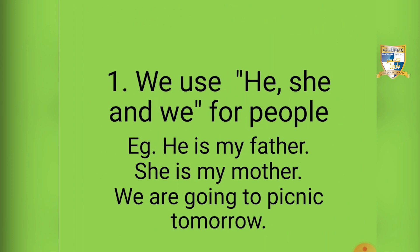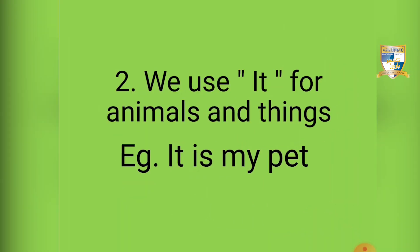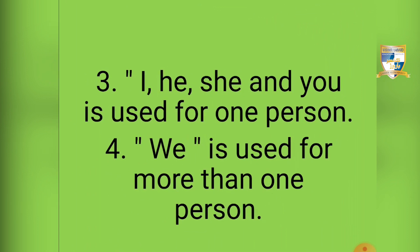We use 'it' for animals and things. For example: 'It is my pet.' We use pronouns I, he, she, and you for one person, and we use 'we' for more than one person.